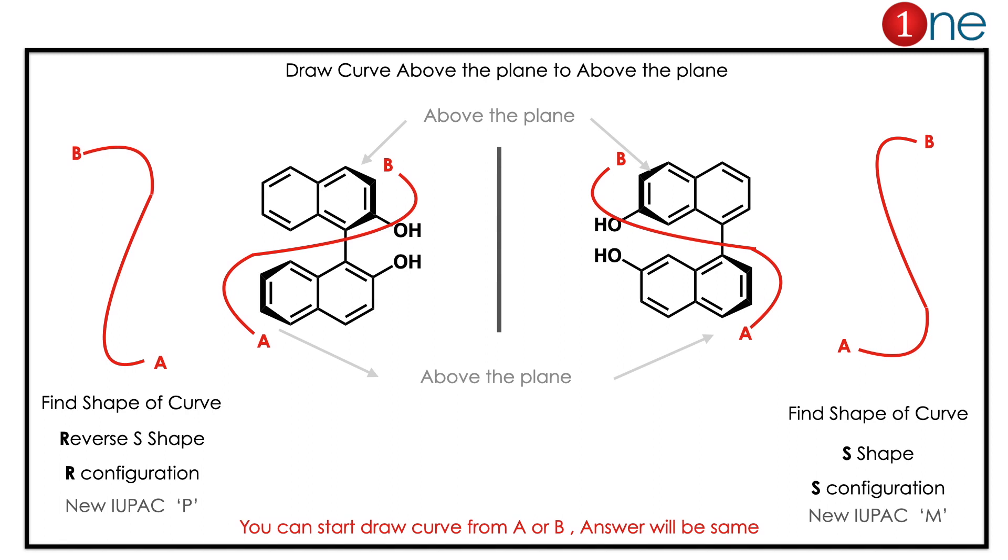Finding the configuration is easy because you have to look at the above the plane atoms. You have to go from above the plane to above the plane. Here are two molecules which are mirror images of each other.